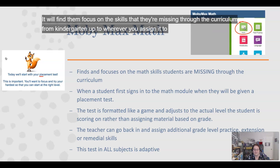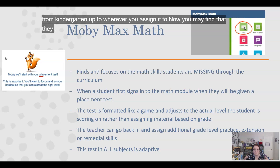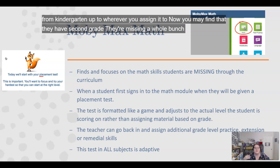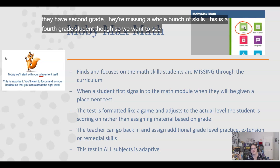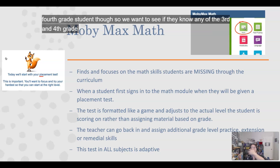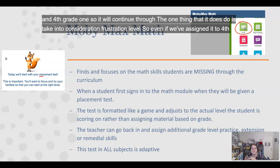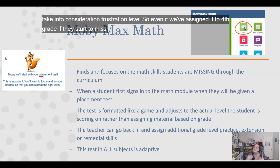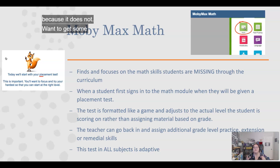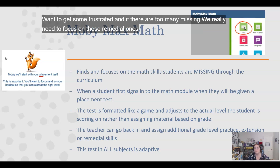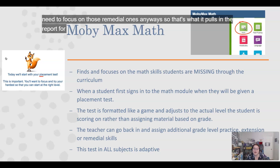You may find that a student is missing a whole bunch of second-grade skills, but since they're a fourth-grade student, MobiMax will continue through to see if they know any third and fourth grade skills as well. One thing it does is take into consideration frustration level. So even if we've assigned it to fourth grade, if they start missing too many questions it will stop, because it does not want to get them frustrated. If there are too many skills missing, we really need to focus on those remedial ones anyway, and it pulls that into the report for you.